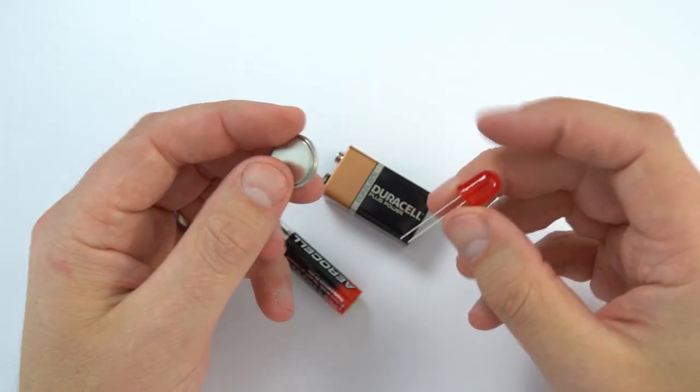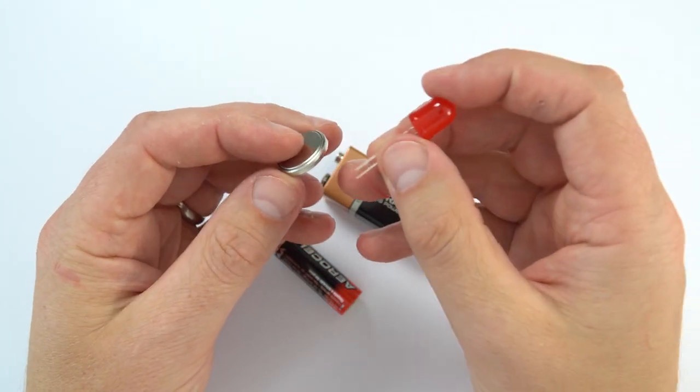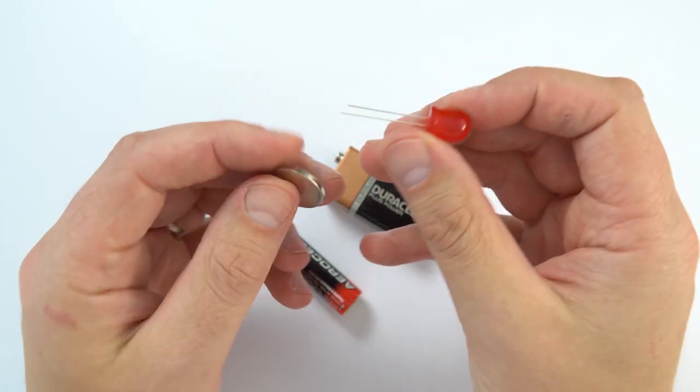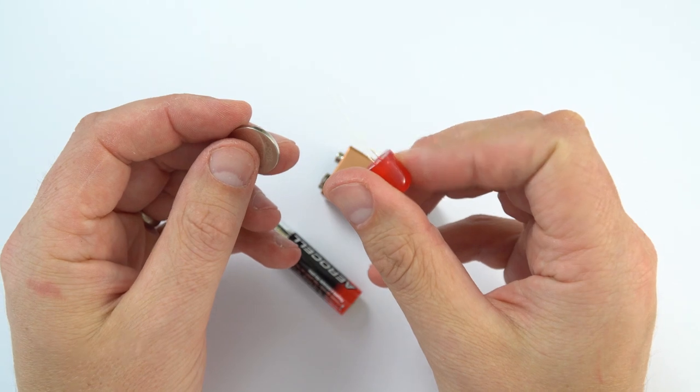It's called a button cell and what I have here is an electrical component, it's an LED. If I connect it up you can actually see there's two legs, one is slightly longer than the other.